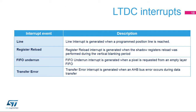The LTDC supports several interrupts: a line interrupt generated when a programmed line position is reached; a register reload interrupt generated when shadow registers are relocated during the vertical blanking period; a FIFO underrun interrupt generated when a pixel is requested from an empty layer FIFO; and a transfer error interrupt generated when an AHB bus error occurs during data transfer.